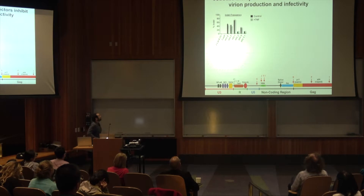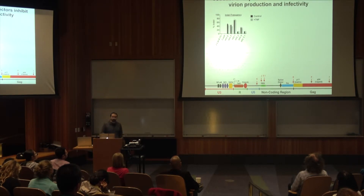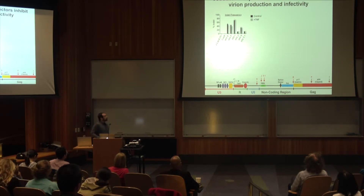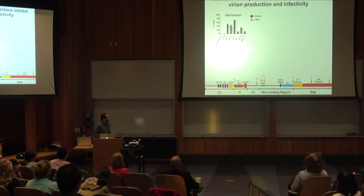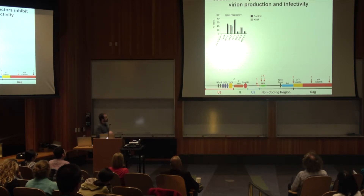Looking at indel frequency of our six guides, plus and minus TNF-alpha, there's no difference between conditions. This was done in JLAT 11.1 clones, which are among the leakier HIV JLAT clones, so the lack of difference with TNF-alpha stimulation wasn't surprising. Guide I is our best cutter, followed by E and F — the three guides in the GAG region. Guide 9 also cuts pretty well. We were slightly disappointed that guides J and 5.1 didn't cut better, as they target an extremely important site in the primer binding site.